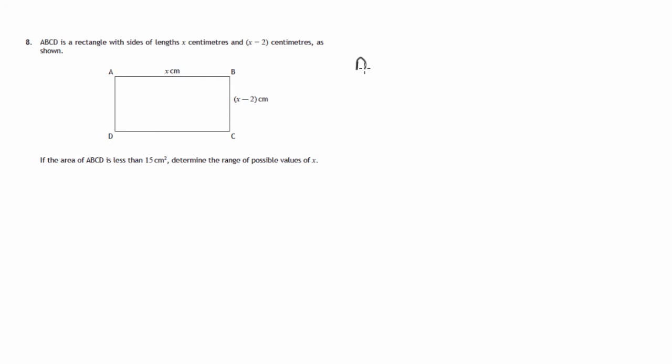So first of all, the area will be equal to length times breadth. So the statement that the area is less than 15 square centimeters becomes x times x minus 2 is less than 15. Let's multiply this out: x squared minus 2x is less than 15.